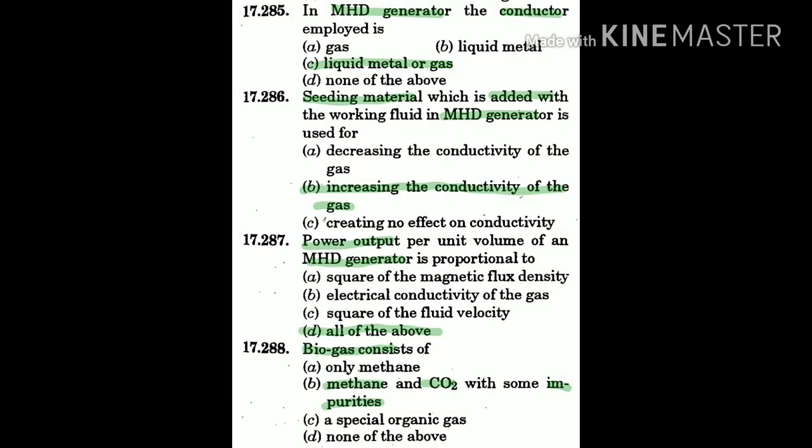Question 285: In an MHD generator, the conductor employed is — the answer is: liquid metal or gas.